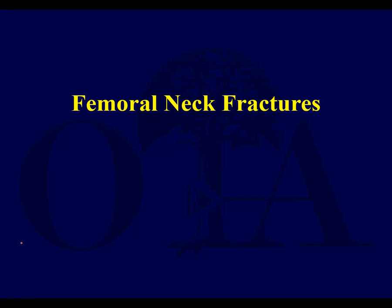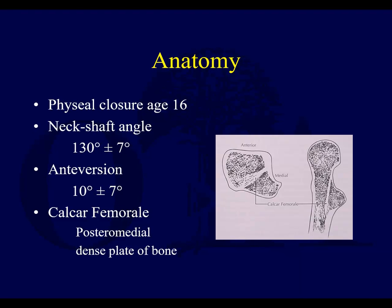This is a big topic. It's a common injury, so many of you are already familiar with these, but let's go through some of the basic principles. The physis closes roughly age 16 — there's obviously a range. Neck shaft angle normally is about 130 degrees and anteversion about 10 degrees, but there's a lot of variability between people and across different parts of the world. The calcar is that dense plate of bone along the posteromedial part of the proximal femur, which comes up a lot when we talk about fixation strategies.